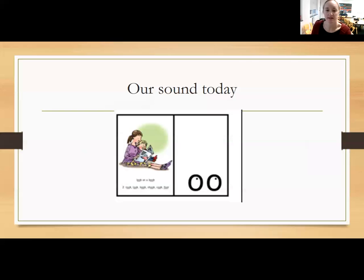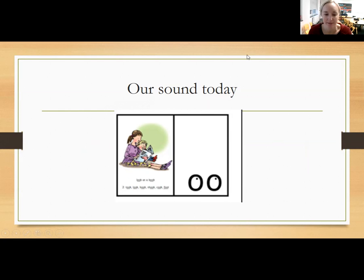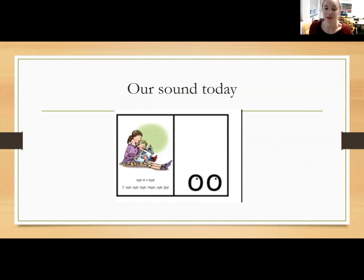Fabulous. So this is our sound today. Our sound has got two letters — the letter O and an O. Together we call this a digraph when we have two letters that make one sound. So our sound today is U. And on the other side you can see we've got two people there and they are reading a book.